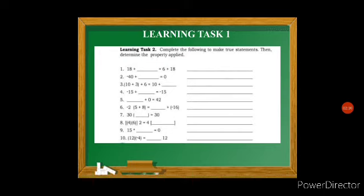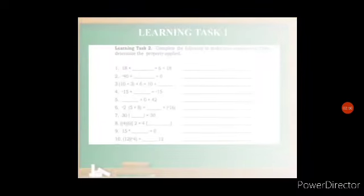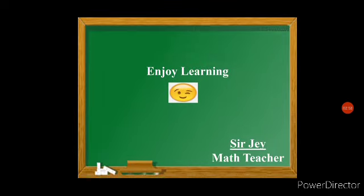For Learning Test 2, complete the following to make true statements then determine the property applied. For number 1: 18 plus blank equals 6 plus 8 — we fill in 6, making it 18 plus 6 equals 6 plus 18, which is the commutative property. Continue in the same way for numbers 2 through 10. That is all for today — enjoy learning! Once again, your math teacher, Sir J.